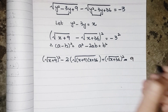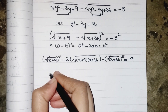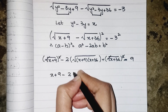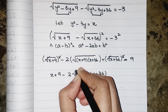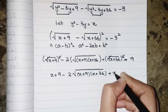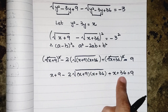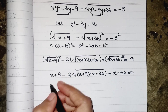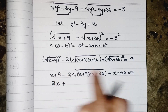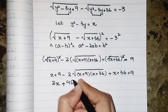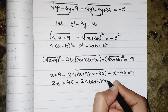The roots cancel each other out, so it becomes x plus 9 minus 2 times the square root of (x plus 9)(x plus 36) plus x plus 36 equals 9. Now we have x and x here, and 36 and 9 are constants, so x plus x gives 2x, and 9 plus 36 gives 45.